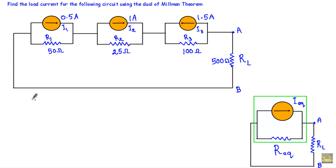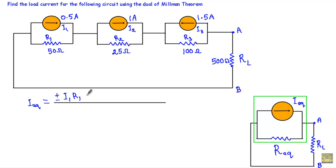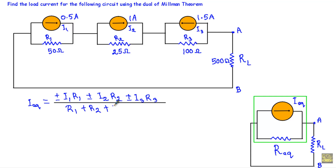To calculate I_equivalent, we use the formula: I_equivalent equals (±I1·R1 ± I2·R2 ± I3·R3) divided by (R1 + R2 + R3), since we have three current sources in total.